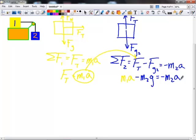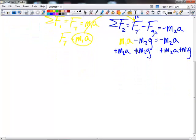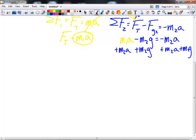We can put all of our A's on the left-hand side and all of our G's on the right-hand side. I'm going to add my M2A to both sides and add my M2G to both sides. So when we look at our new summation equation, we'll have M1A plus M2A equals M2G.